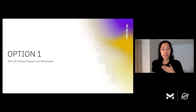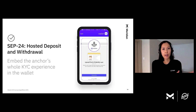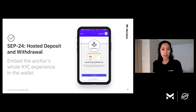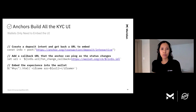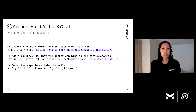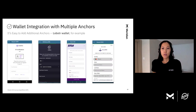What we started with is SEP24 — hosted deposit and withdrawal. SEP24 allows the wallet to embed the anchor's whole KYC experience within the wallet. So users are on the Vibrant app, but their KYC experience is handled by our anchor, StableX, and Vibrant just embeds StableX's KYC experience. This is very convenient for wallets — they don't have to spend time or resources implementing their own KYC user interface because anchors build all the KYC UI. It's exactly like an iframe, embedding someone else's web page into your application. This makes wallet integration with multiple anchors much easier.